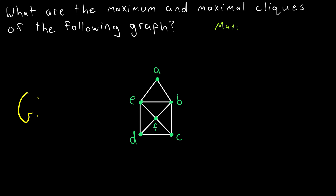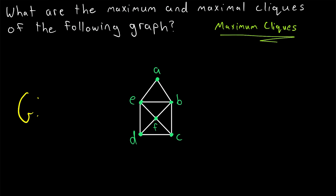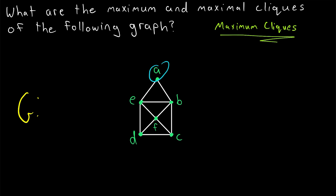Let's begin by finding the maximum cliques of our graph G. There are a number of ways we could identify the maximum cliques, but let's just walk through the reasoning I would use to solve this problem. Our graph has six vertices, A through F. So the largest clique it could possibly have is a clique with six vertices, but that would mean the graph itself is a complete graph, which we see is not the case here.